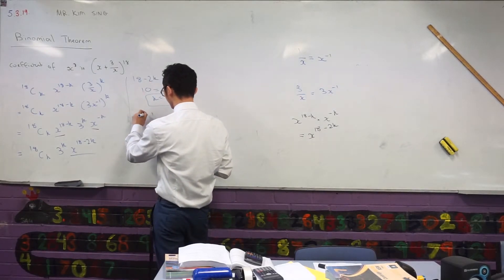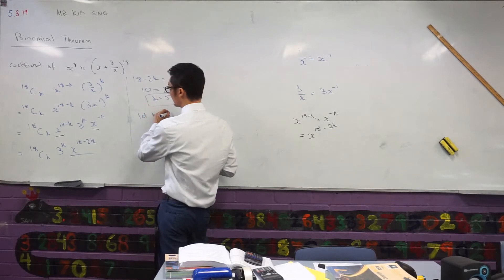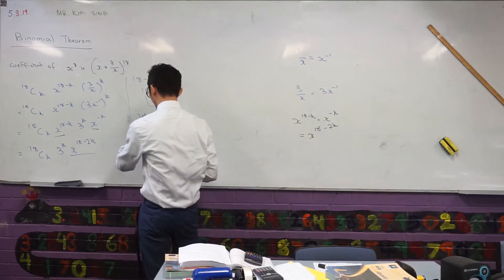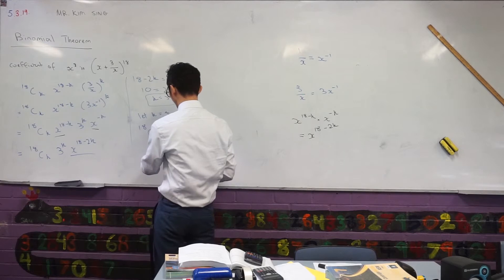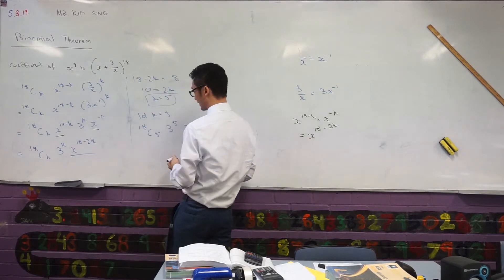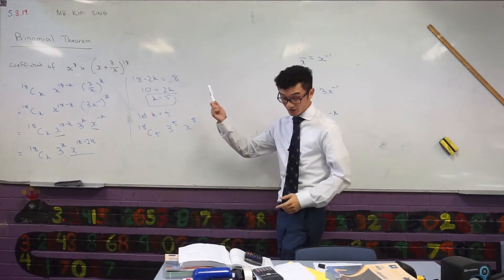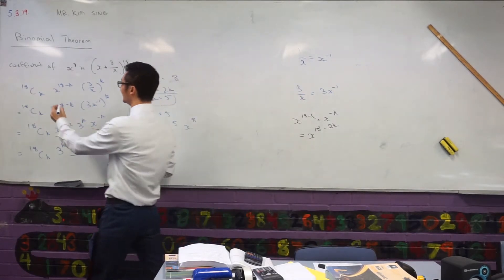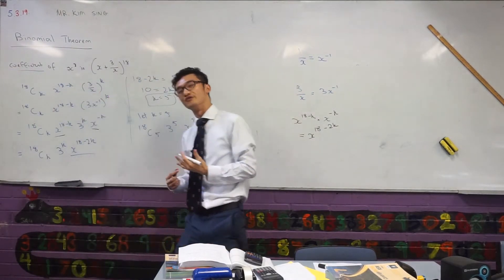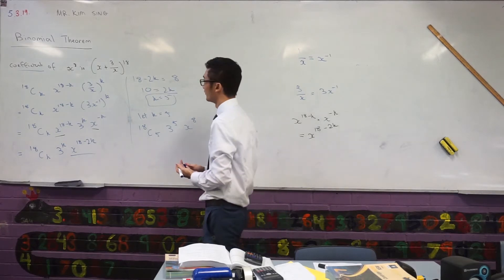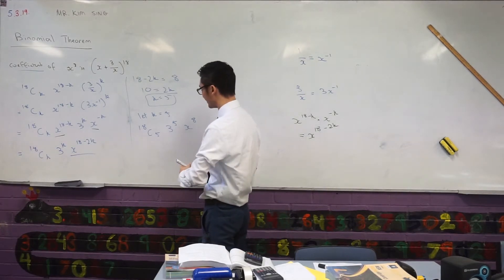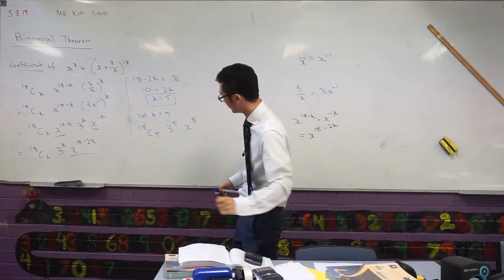So I've got I'm choosing k equals 5. So let's let k equals 5 here. Inside this general term we would have 18 choose 5, 3 to the power 5, x to the power 8, which is what I was looking for. Now the question actually says, let's go back to the question, right? It actually says I'm looking for the coefficient. So I'm looking for the number in front of that. Well the number in front of that is actually going to be this whole part here.